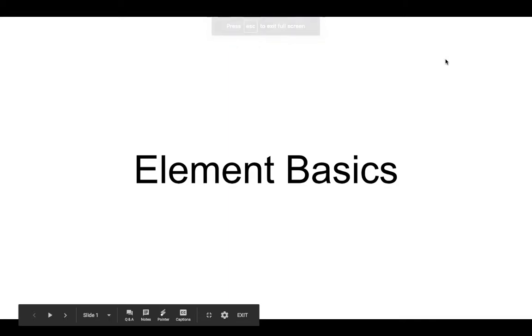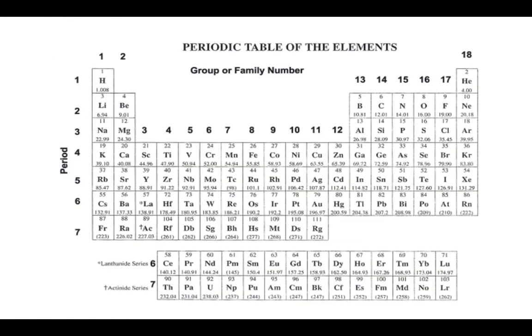Hi, I'm a Bullis student tutor, and in this video I'll be talking about element basics. There are currently 118 elements on the periodic table, although the periodic table is updated as new elements are discovered and added.